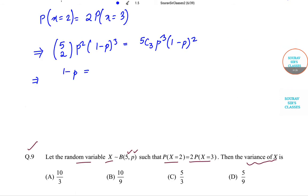So 1-p = 2p, which can be rewritten as 3p = 1, or the value of p is 1/3.